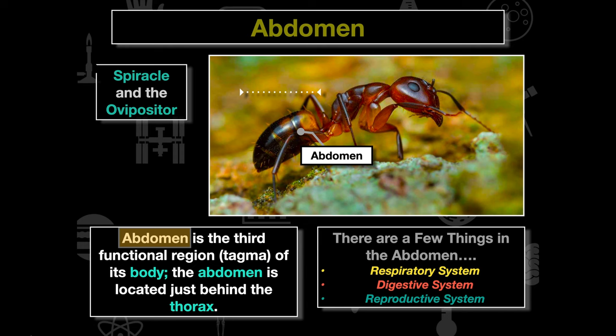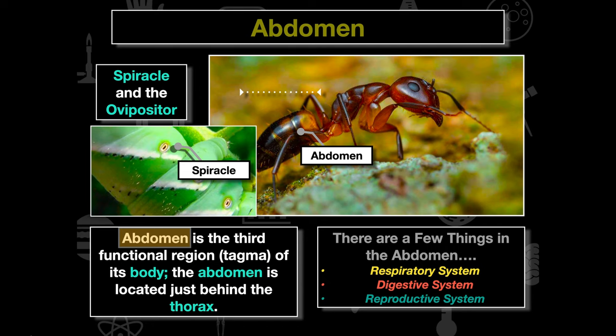There are two specific organs that are really important: spiracles and ovipositors. Spiracles are small holes that allow gas exchange for the insect, allowing it to breathe. The ovipositor allows female insects to lay eggs. In this next section, we're going to look at each of these organs in a little more detail.